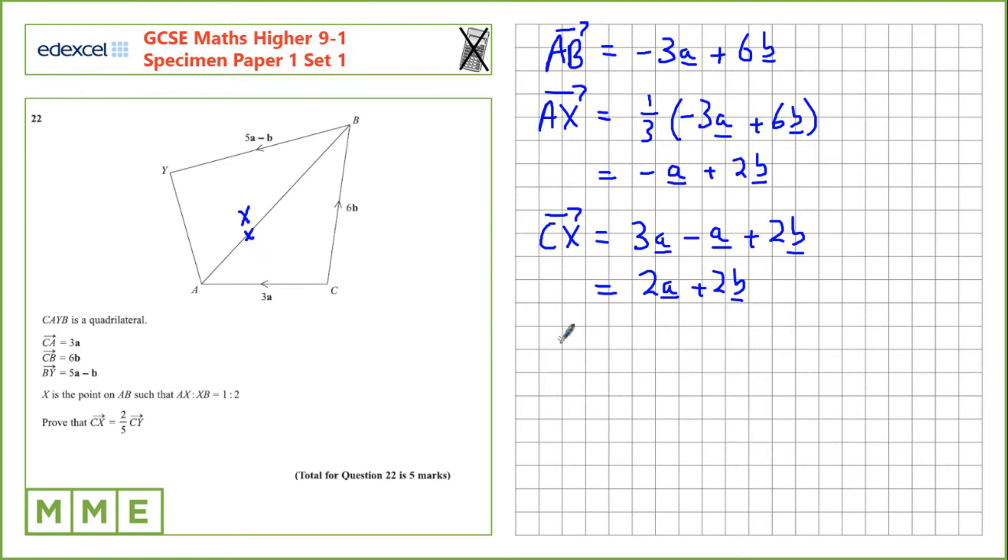The next thing we can write is we can actually calculate CY now. So from C to Y, we're going to go from here to here to here. That's 6b plus 5a minus b. If we collect up terms there, we have 5a plus 5b.